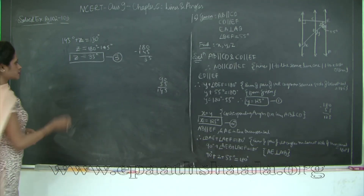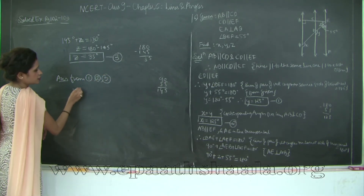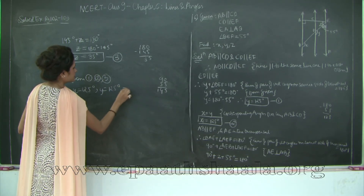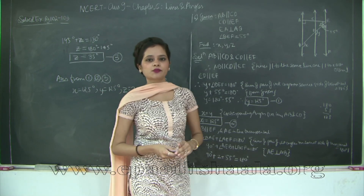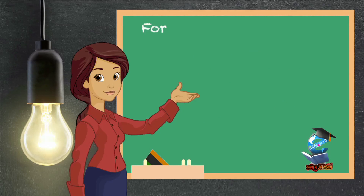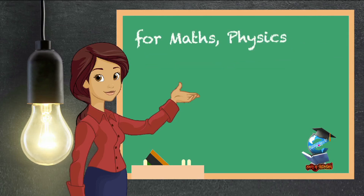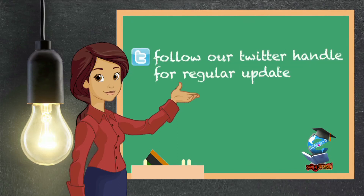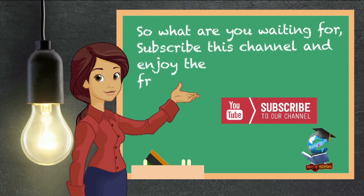From statements 1, 2, and 3, we have our answers: Y equals 125 degrees, X equals 125 degrees, and Z equals 35 degrees. With this we wind up with the solved examples. In the next class we will start with Exercise 6.2. Thank you. For more such videos and completely free educational content, log on to www.epaatshala.org or visit our Epaatshala YouTube channel — we have every question solved for math, physics, chemistry, and biology. Subscribe, share, and enjoy the freedom of education.